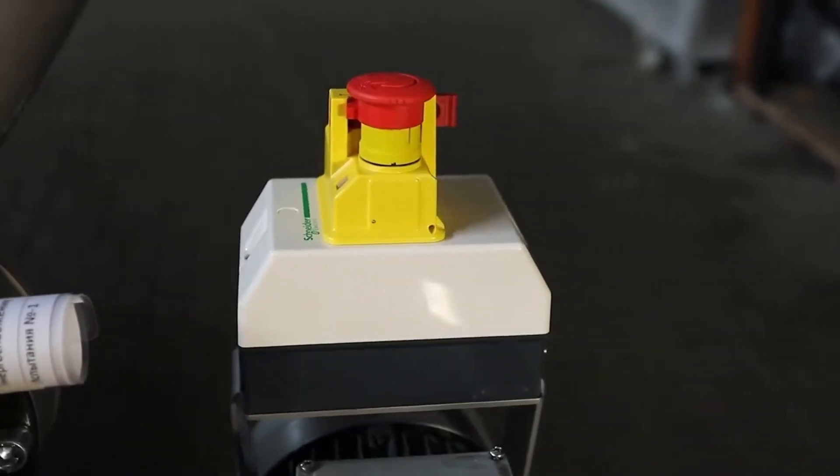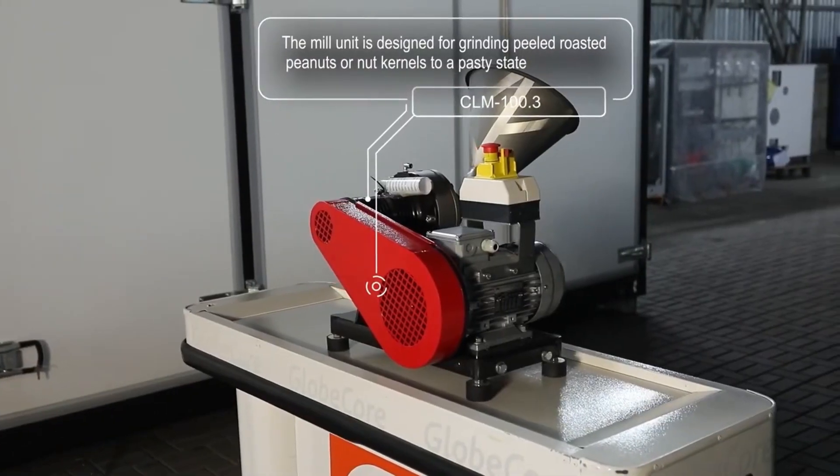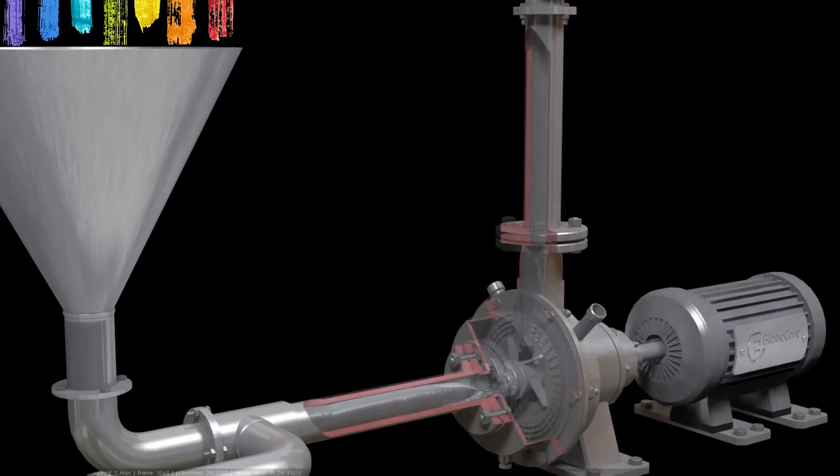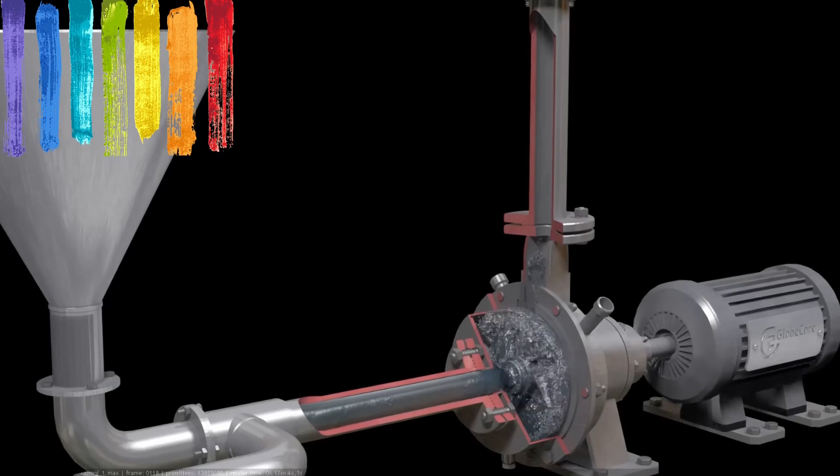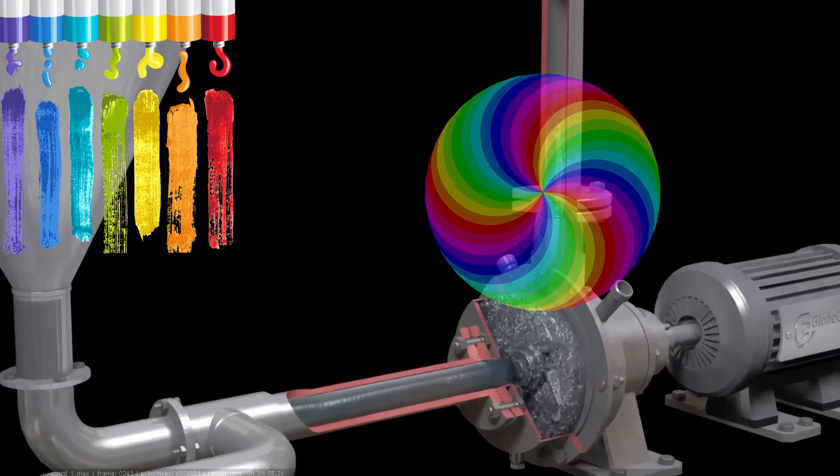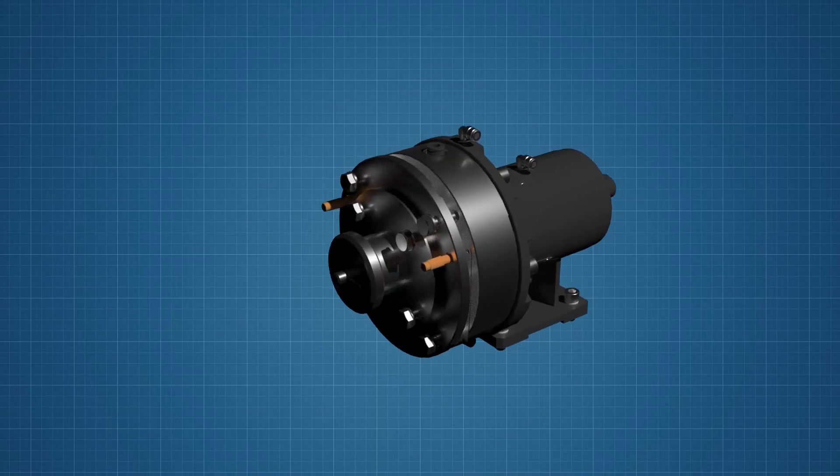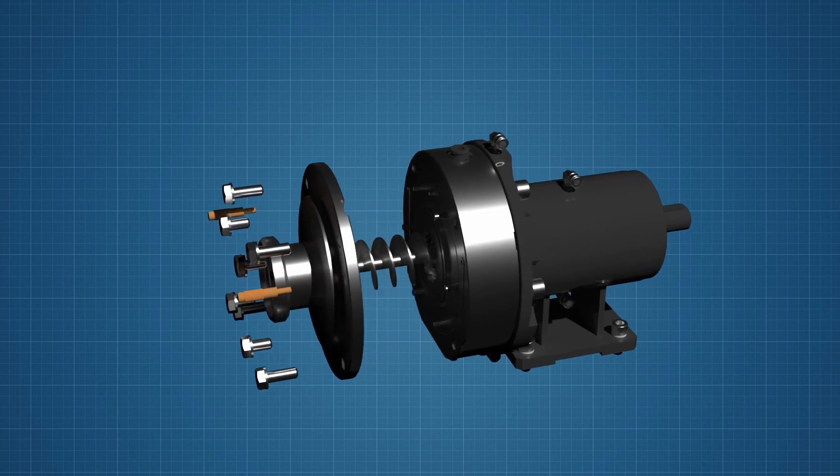GlobeCore colloid mills operate on the principle of high-speed grinding and mixing. Their design includes a disc-shaped rotor located close to a stator and an adjustable rotor-to-stator gap that ensures grinding of particles up to 1 micron and their uniform distribution in the liquid phase.